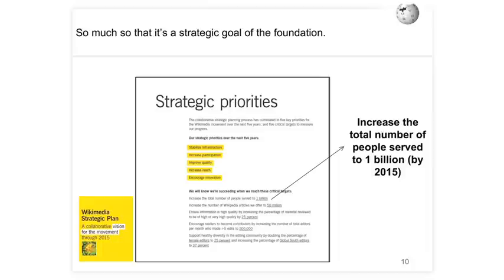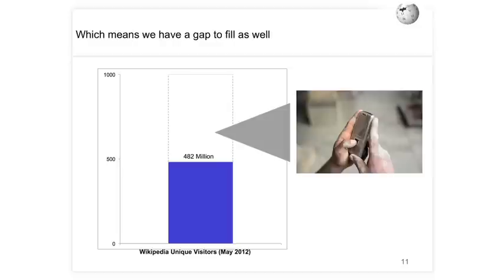This is a goal of ours. In the strategic plan released in 2010, we very publicly said we want to reach one billion people by 2015 — essentially three years to reach a billion people. We're only halfway there. As of May, our reach of unique visitors for Wikipedia is about 480 million from our comScore data, so we essentially need to double that. We believe we can close this gap through mobile.